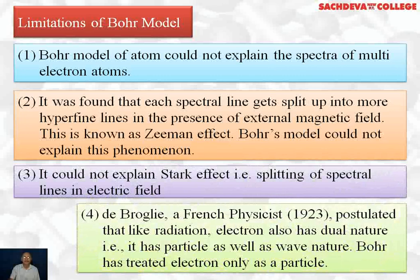Number three, it could not explain Stark effect, that is splitting of spectral lines in electric field. Number four, de Broglie, a French physicist, postulated that like radiations, electron also has dual nature. That is, it has particle as well as wave nature. Bohr has treated electron only as particle.